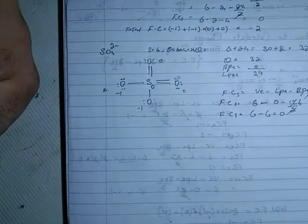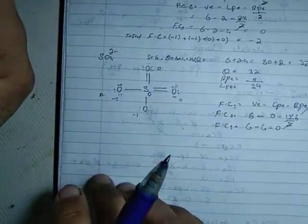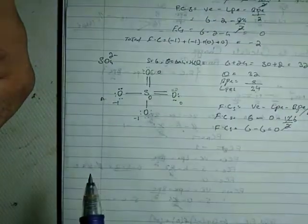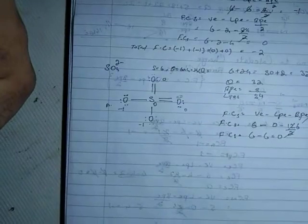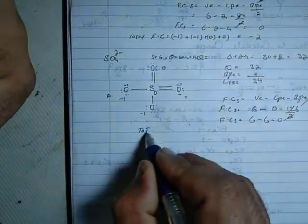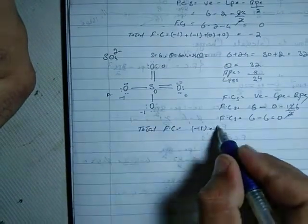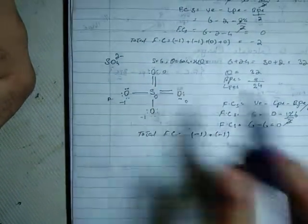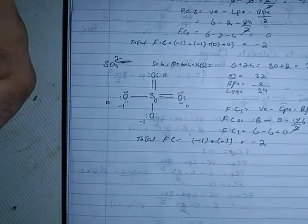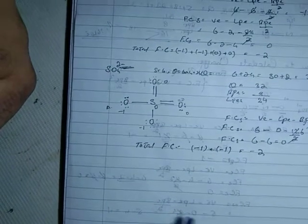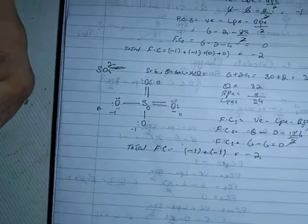The total formal charge for this structure is minus 1 plus minus 1 plus 0 equals minus 2, which matches the charge. With the central atom having zero formal charge, this double-bonded structure is more stable.